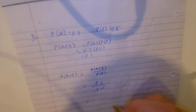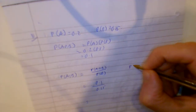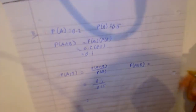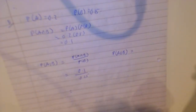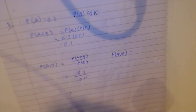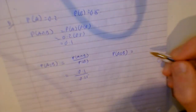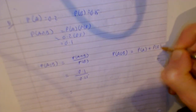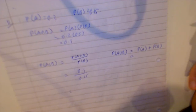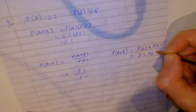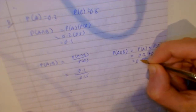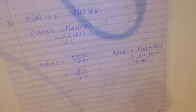Now for P(A ∪ B): A union B covers all of A and all of B. Since they are independent with no overlap to subtract, P(A ∪ B) equals P(A) plus P(B), which is 0.2 plus 0.15, and that is 0.35. Easy enough.